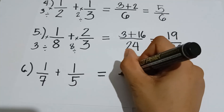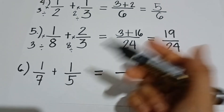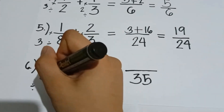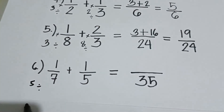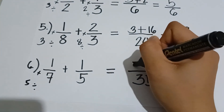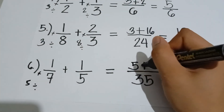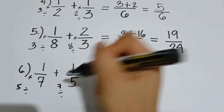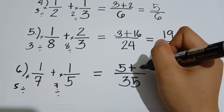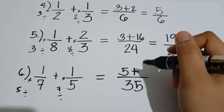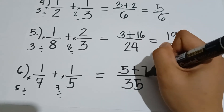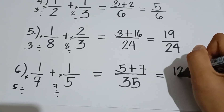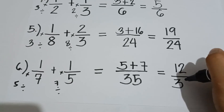Next: 1 over 7 plus 1 over 5. The LCD for 7 and 5 is 35. So 35 divided by 7 gives us 5, and 5 times 1 gives us 5. Plus, 35 divided by 5 is equal to 7, and 7 times 1 is equal to 7. We add 5 plus 7, so the answer is 12 over 35.